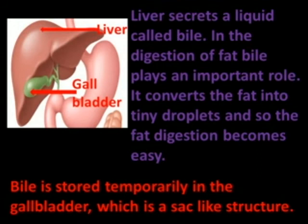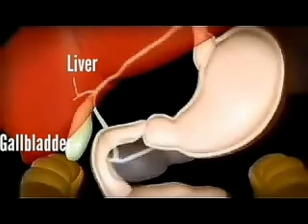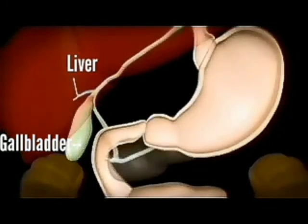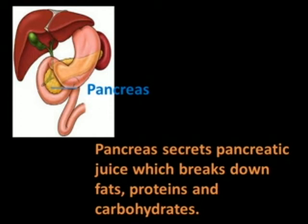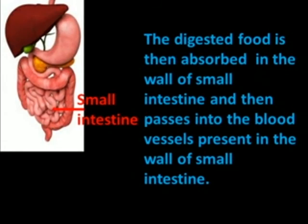Bile is stored temporarily in the gallbladder, which is a sac-like structure. The pancreas secretes pancreatic juice, which breaks down fats, proteins, and carbohydrates. The digested food is then absorbed in the wall of the small intestine and passes into the blood vessels present in the wall of the small intestine.